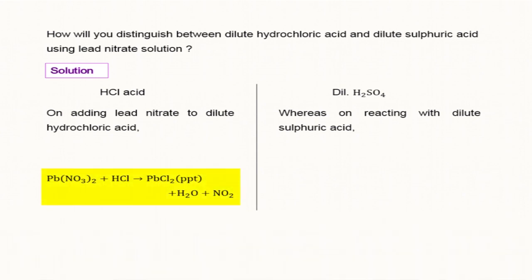When you add lead nitrate, you get lead chloride as a precipitate in the test tube containing HCl and lead sulfate as the precipitate in the test tube containing H2SO4.